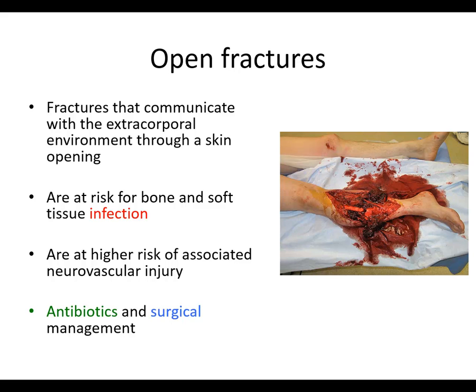Open fractures essentially are fractures that communicate with the environment outside the body through a skin opening. Now obviously this example here is an open fracture, but this is the extreme example. Sometimes it's not so clear — you just have a patient with a fracture and then there's some abrasions on the leg and one of them actually is a little poke hole, just seems to be bleeding a little bit too much. Well, actually that could be an open fracture, a type 1 open fracture. Those things can be missed. This mess here — that's obviously not going to be missed.